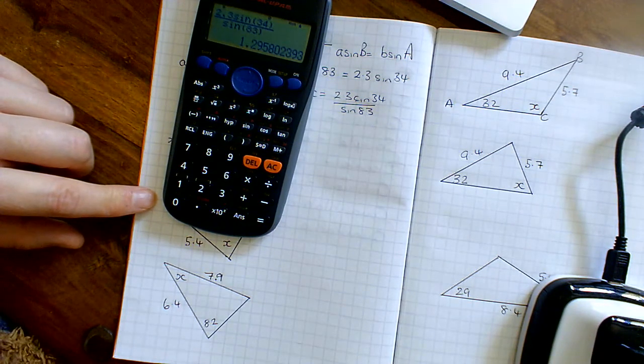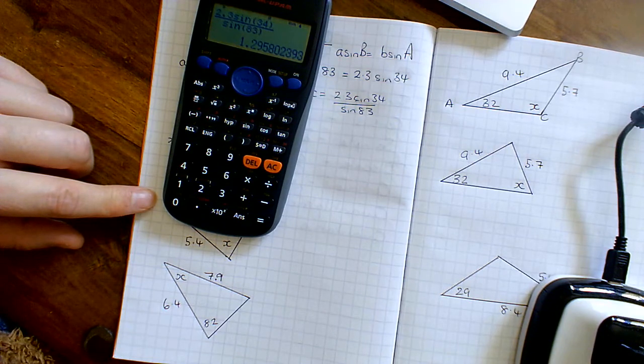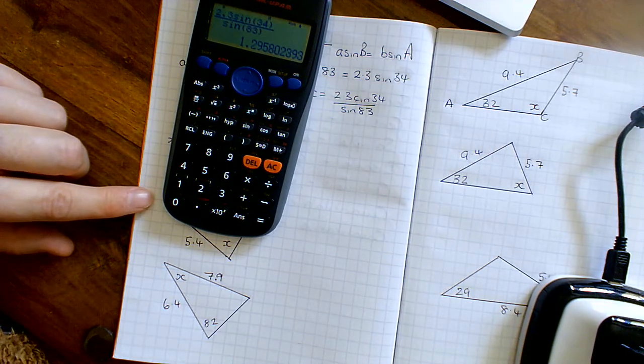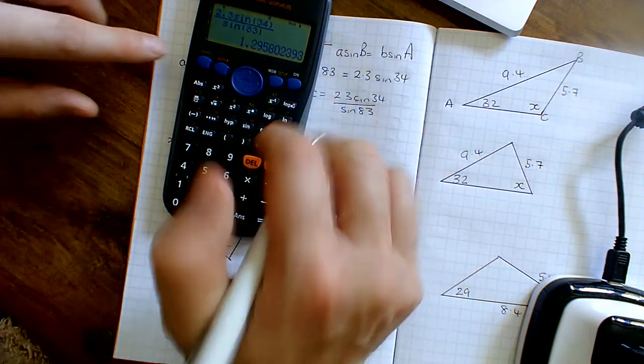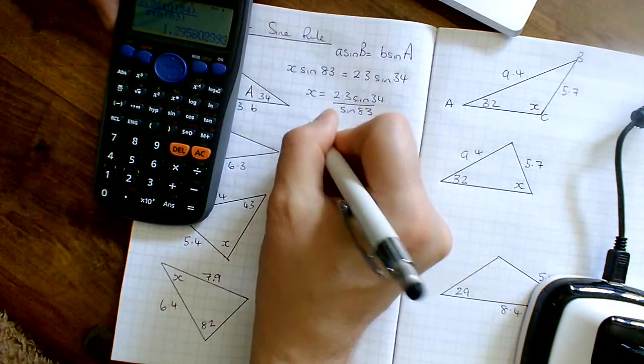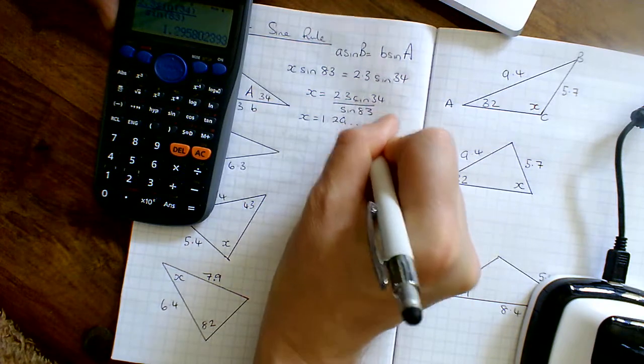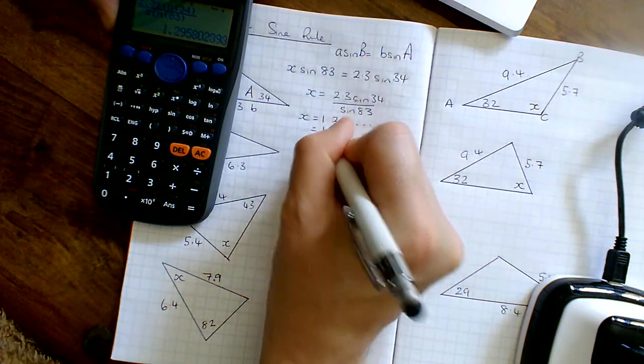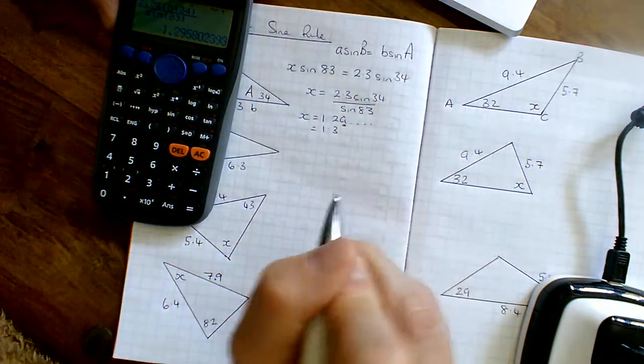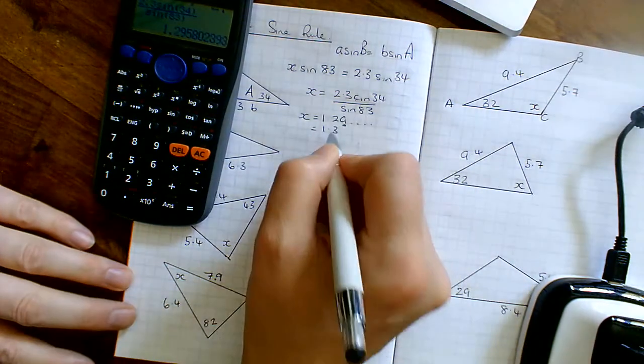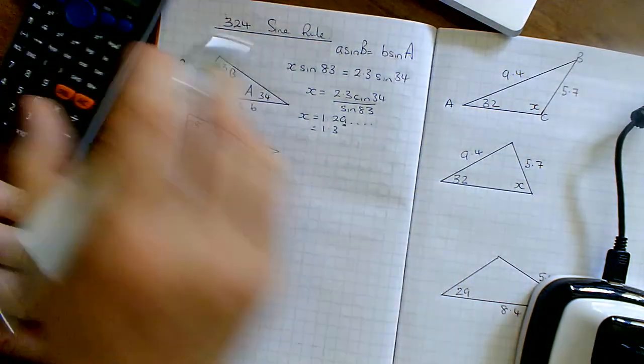It says one decimal place. So X is equal to 1.29, that runs off forever. But to one decimal place, that's going to be 1.3 because the second decimal place was a 9, 5 or more rounds up. So I've got 1.3.